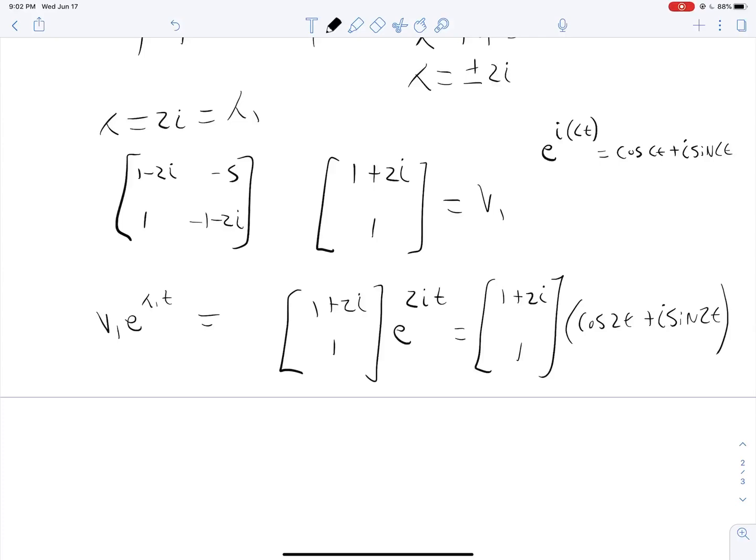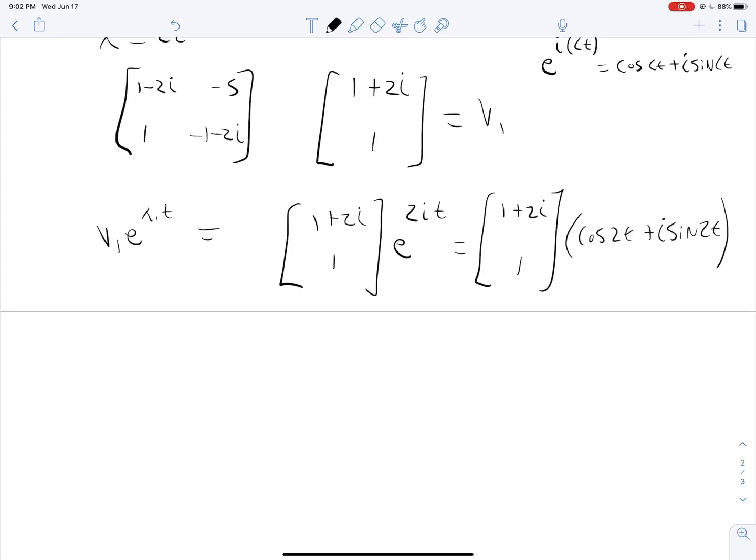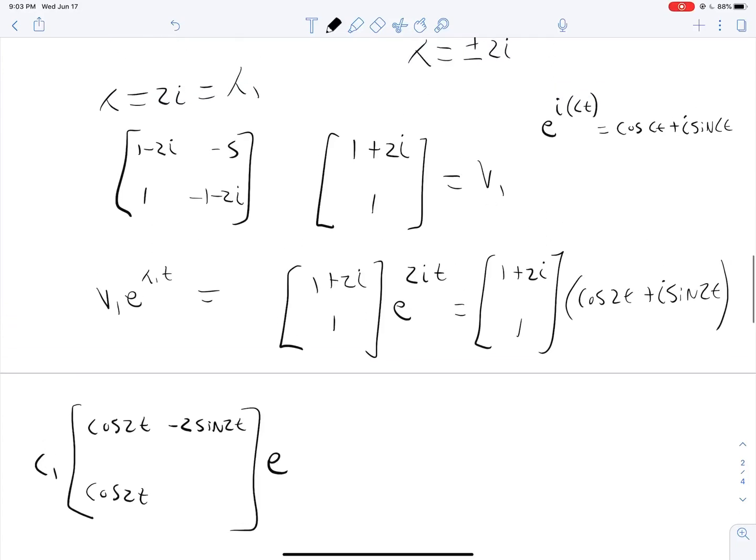And now all we have to figure out is how does this thing expand. If we kind of foil these guys in on the top and also multiply them in on the bottom, we're going to get some components that have an i attached and some components that are purely real. And what we're going to do is split up our eventual solution by those lines. So when do we get a real component here? Let's make a vector for it. Well, if we multiply cosine on the top to that 1, we get cosine of 2t, which is real. And also if we multiply it on the bottom to that 1, we'll get a cosine of 2t. But then if we multiply i sine 2t to that 2i on top, we'll also get something real. Those i's will multiply together and give us negative 1. So that gives us minus 2 sine 2t right there. And that's it for the reals.